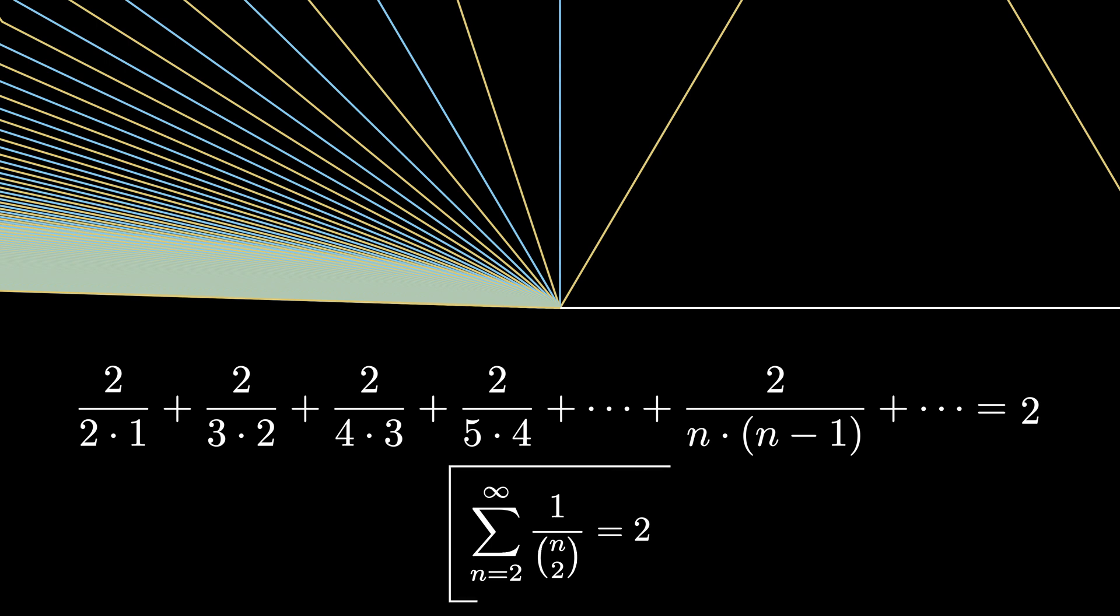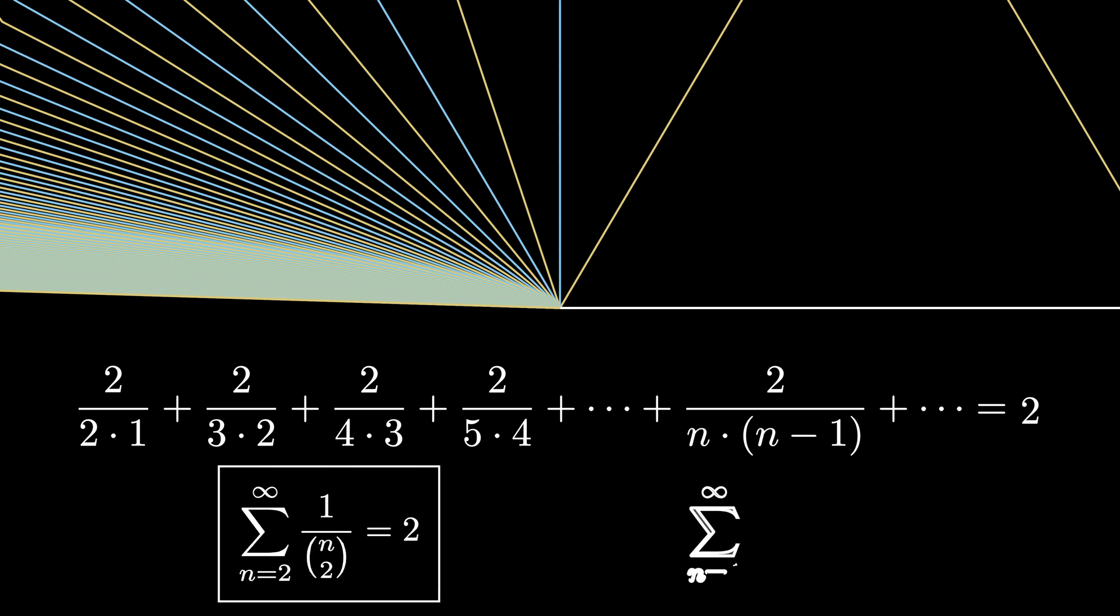We can also divide both sides of the equation by 2 producing another famous infinite sum, the one where n ranges from 1 to infinity of 1 over n times n plus 1, and this sum equals 1.